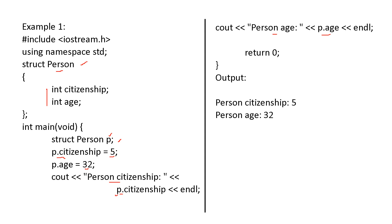First you define the structure and state what elements are within it. Then you create the variable for that particular structure. With the help of that variable and the dot operator, you call the elements within the structure and do as you need — print or perform any operation based on necessity. I hope it is clear for you. Thank you.